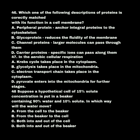In aerobic cell respiration: A. Krebs cycle takes place in the cytoplasm. B. Glycolysis takes place in the mitochondria. C. Electron transport chain takes place in the cytoplasm. D. Pyruvate enters into the mitochondria for further stages. The correct statement is D: pyruvate enters into the mitochondria for further stages. Glycolysis takes place in the cytoplasm.